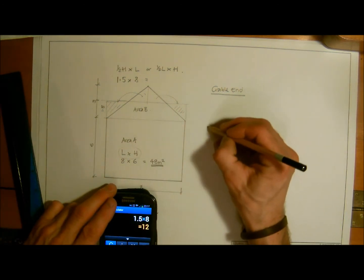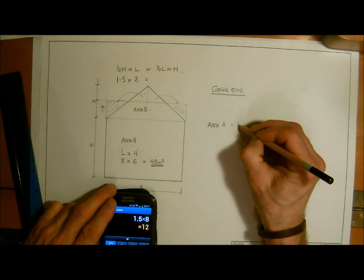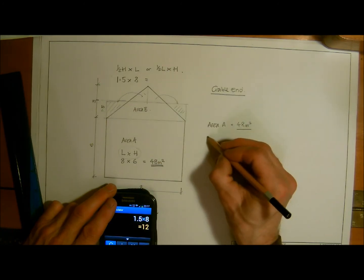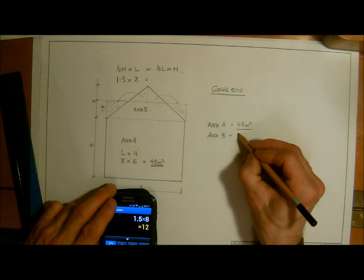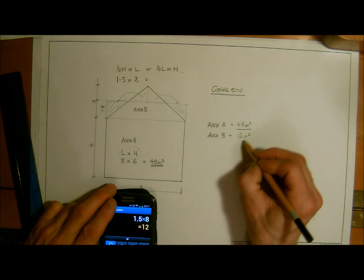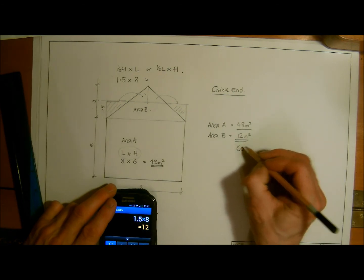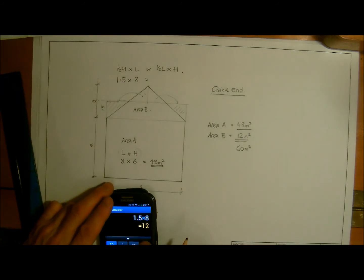We have Area A equals 48 meters squared and Area B equals 12 meters squared. Add them both together and we have 60 meters squared.